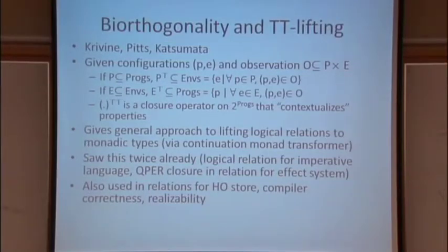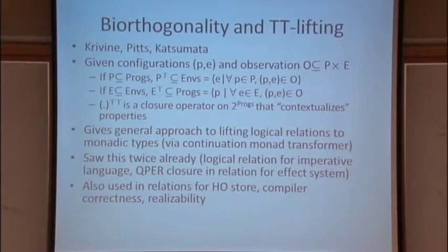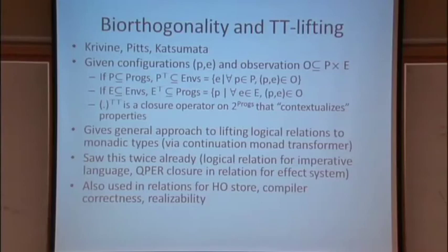In various concrete contexts this has interesting consequences. In domains, if you take observations to be divergence — so plugging together a program and environment is the application of a continuation to a function into the two-point Sierpinski space applied to your value — then after top-top closure, whatever predicate you started with, you end up with something admissible: something closed under limits of chains and with other interesting properties.